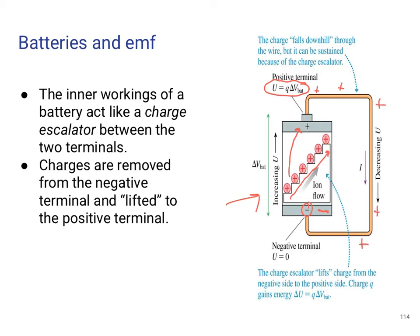As the charge goes through the circuit, it loses electric potential energy and gets back down to the negative terminal. That's what causes this charge to flow — the charge falls downhill, or down in decreasing electric potential through the wire. Then it goes back up because of the battery, which increases the electric potential energy. So the charges are removed from the negative and lifted to the positive so that they can go through the circuit.